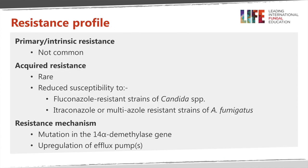We don't see very much intrinsic resistance in susceptible organisms, but we do get acquired resistance, particularly in fluconazole-resistant strains of Candida — only about half of Candida glabrata strains are actually susceptible to voriconazole. We also have both itraconazole- and voriconazole-resistant, as well as multi- and pan-azole-resistant Aspergillus fumigatus. Resistance in Aspergillus niger, flavus, and terreus appears to be rare. The resistance mechanism is usually a mutation in the 14 alpha demethylase gene, but upregulation of efflux pumps and other mechanisms have also been seen.